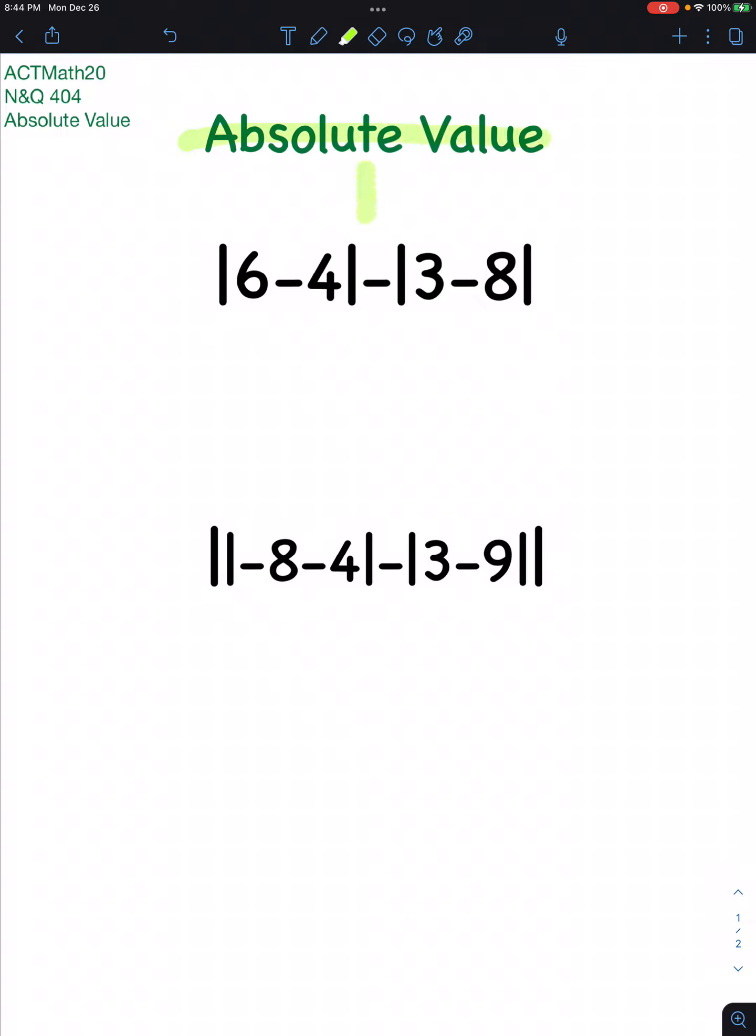The key concept when working with absolute value is to understand absolute value is nothing but positive. So anything that comes out of our absolute value lines there and there, or let's say there and there, is going to be positive. So 6 minus 4 is 2. Make sure whatever comes out is positive.